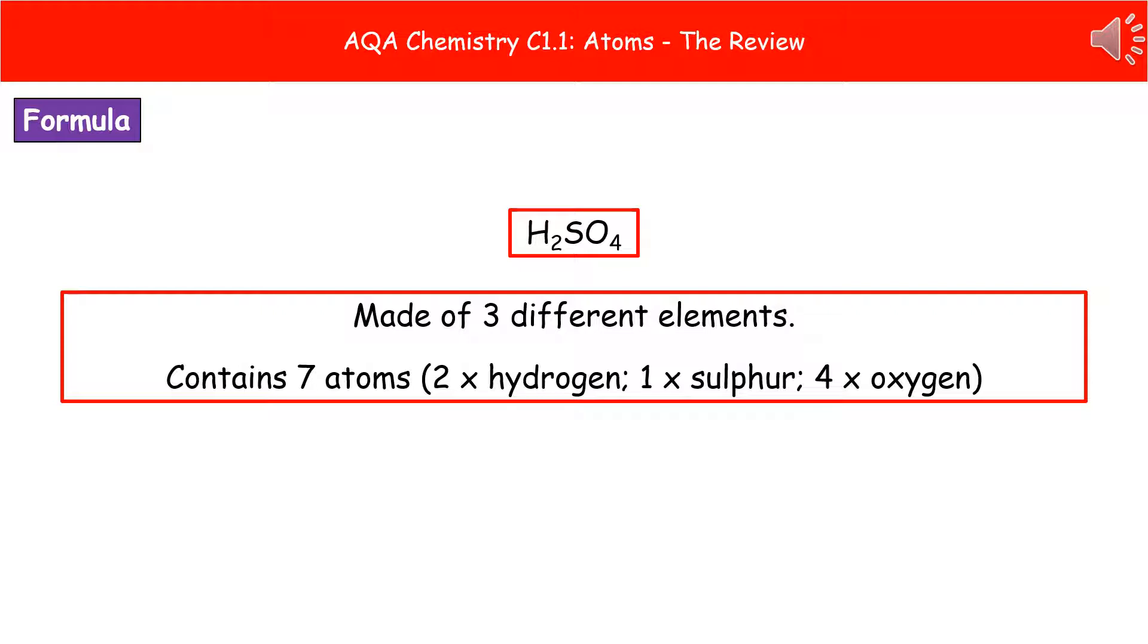and the four after the O tells us there's four oxygens. Just remember when you're looking at those numbers, they only apply to the letter directly in front. So four plus one plus two gives us seven atoms.